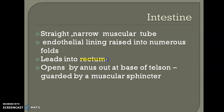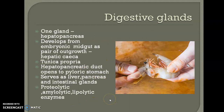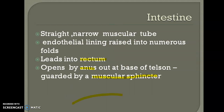The rectum opens to the anus, which is guarded by muscular sphincter muscles. Next is the digestive gland, which is very important as it is the only digestive gland associated with the alimentary canal. It is called the hepatopancreas, midgut gland, or liver. It surrounds the lateral, ventral, and posterior part of the stomach.